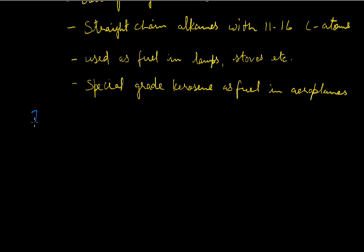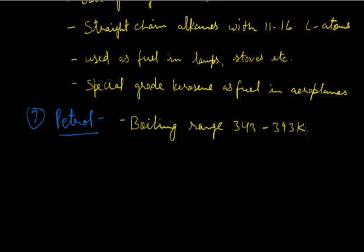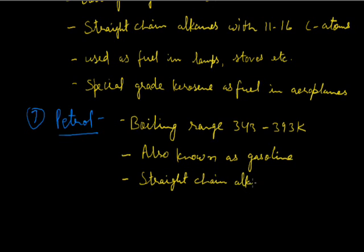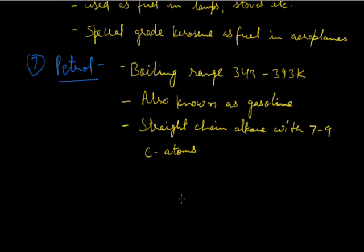Another important product obtained from fractional distillation of petroleum is petrol. Its boiling range is 343 to 393 Kelvin. It is also known as gasoline. It is also straight chain alkane with 7 to 9 carbon atoms. It is used as a fuel in two wheelers, three wheelers, and cars. It is also used as solvent for dry cleaning of clothes.